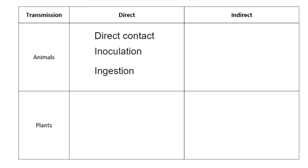The third method of direct transmission is ingestion, which is the scientific term for eating and drinking. Examples include eating contaminated food that has come into contact with pathogens, undercooked food or meat, or drinking unclean water.